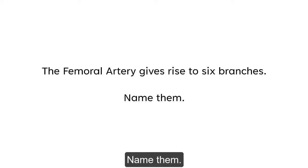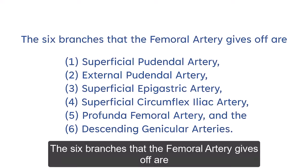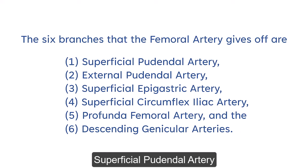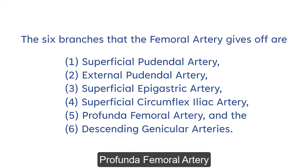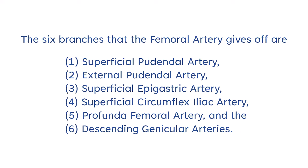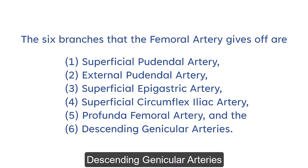Name them. The six branches that the femoral artery gives off are: superficial pudendal artery, external pudendal artery, superficial epigastric artery, superficial circumflex iliac artery, profunda femoral artery, and the descending genicular arteries.